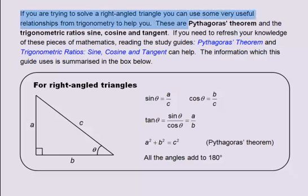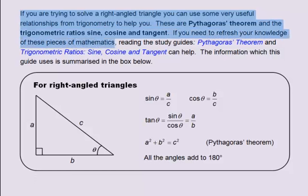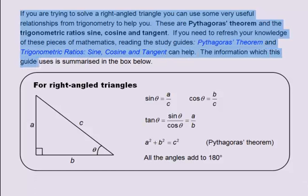These are Pythagoras' Theorem and the trigonometric ratios sine, cosine and tangent. If you need to refresh your knowledge of these pieces of mathematics, reading the study guides Pythagoras' Theorem and Trigonometric Ratios: Sine, Cosine and Tangent can help. The information which this guide uses is summarised in the box below.